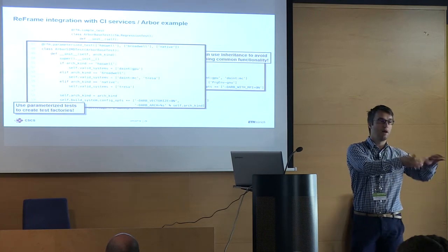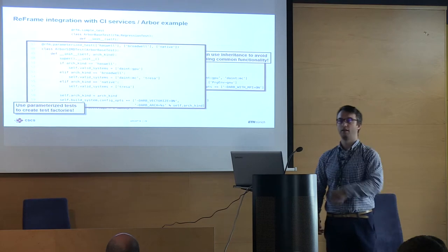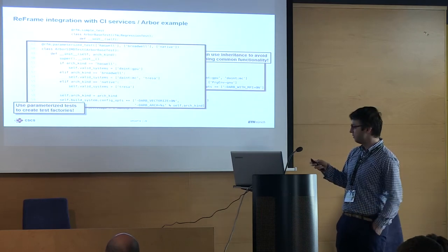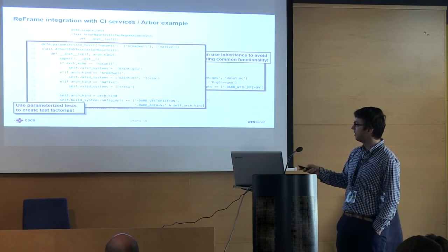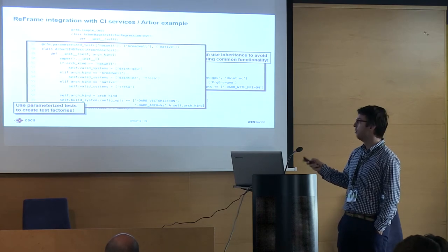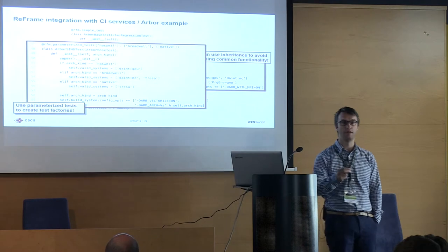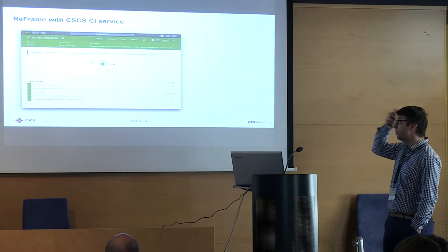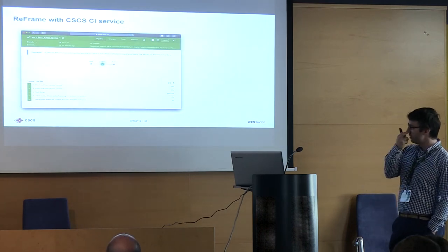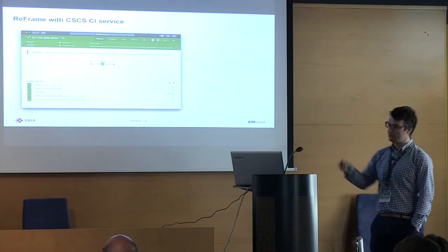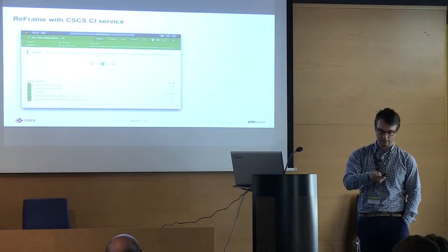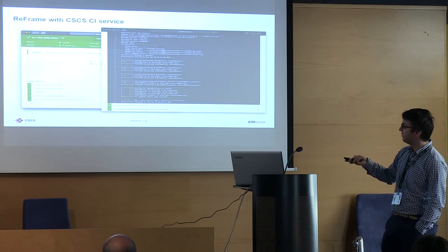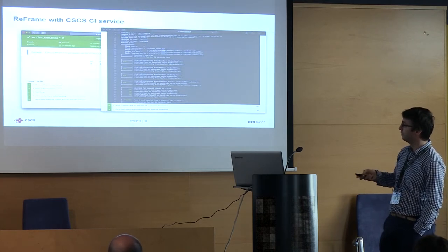If I change a configuration parameter of the system or the name of a partition, most probably I'd just have to adjust the valid system entry or add another environment variable — small things like that. I then did a demo pull request on my fork of that project, which triggered the CSCS CI, which then ran the ReFrame tests showing the output I showed you before.